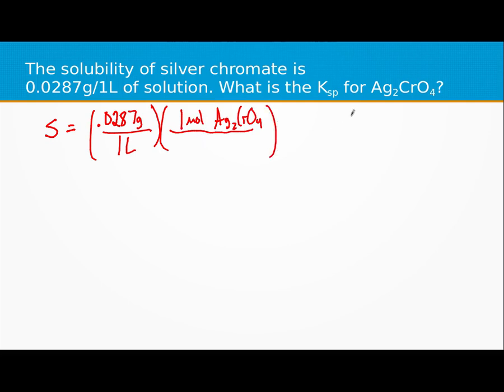We need to get the molecular weight. I have two silver at 107.87, I have one chromium at 52, and four oxygens, giving us a total of 331.34 grams.